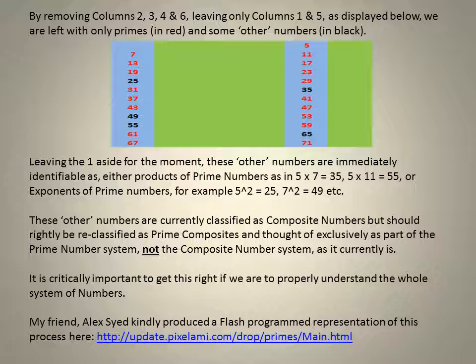Leaving the 1 aside for the moment, these other numbers are immediately identifiable as either products of prime numbers, as in 5 times 7 equals 35, 5 times 11 equals 55, or exponents of prime numbers, for example, 5 squared equals 25, 7 squared equals 49.